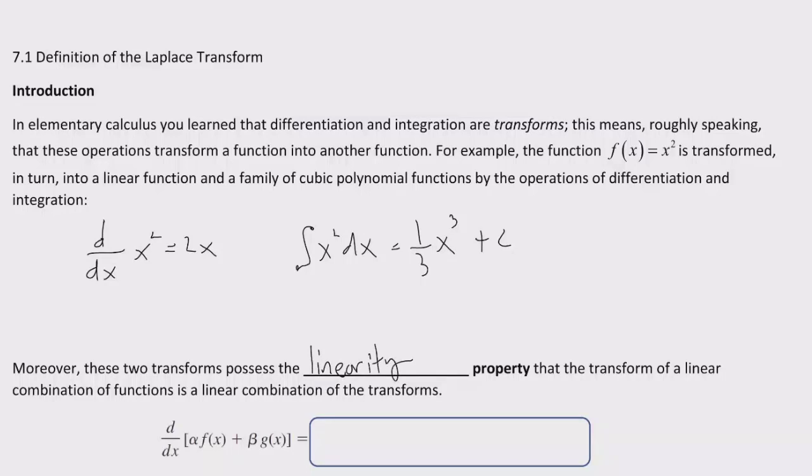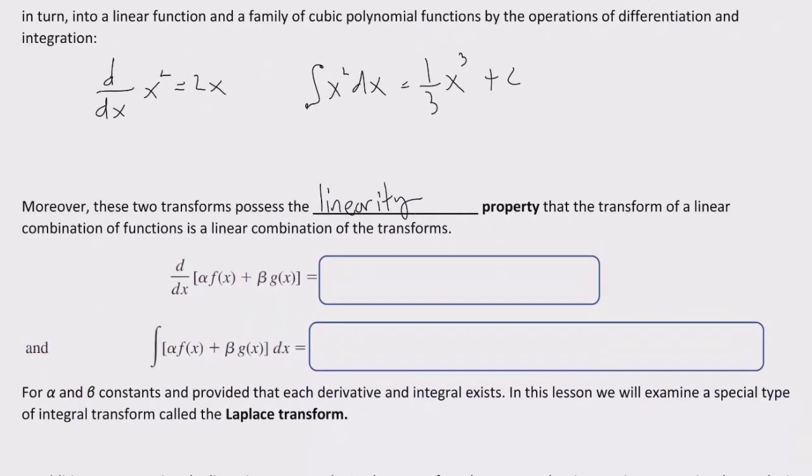So if I take the derivative of a combination of functions, I'm going to show what I'm talking about here. The derivative of alpha f of x plus beta g of x gives me another linear type function: alpha f prime of x plus beta g prime of x.